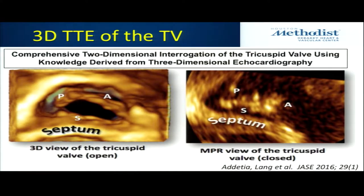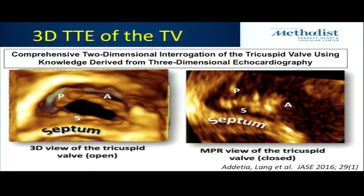There's been a great study by Roberto Lang and his group in Chicago using transthoracic 3D — one of the great applications of transthoracic 3D imaging is to look at the tricuspid valve because it's so anterior. It's the exact opposite on TEE when you're far from the tricuspid valve. But on transthoracic, if you practice and get good at it, you can identify all three scallops in a reasonable proportion of patients.